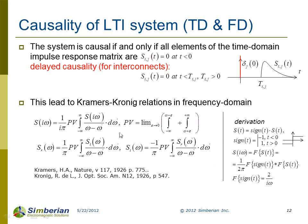To distinguish usable from unusable models, I would like to discuss some physical constraints on scattering parameters. The time domain impulse response matrix should be a real function of time, which means the real part of scattering parameters should be an even function of frequency and the imaginary part should be an odd function of frequency. Typically this is satisfied, except for one condition: zero derivative of scattering parameters at zero frequency.